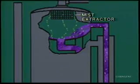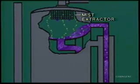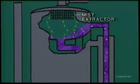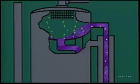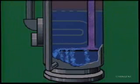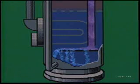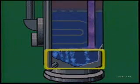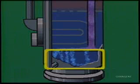As previously discussed, the mist extractor removes tiny liquid particles still entrained in the gas. After leaving the gas separation section through the downcomer, the emulsion enters the free water knockout section.